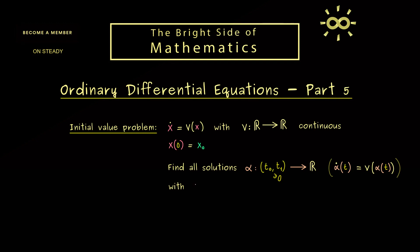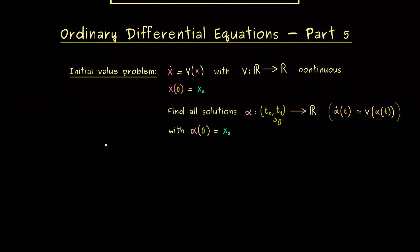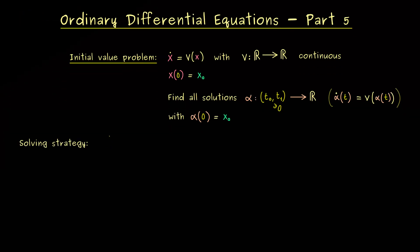This means we fix the value of the solution at a given time point. Note that choosing this point as 0 is not a restriction at all, simply because we have an autonomous ODE where time is not explicitly present. So 0 is an arbitrary choice, but without loss of generality. Now the question is: how can we solve such an ODE with a given initial condition? There is a general solving strategy we can now develop.